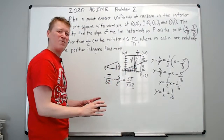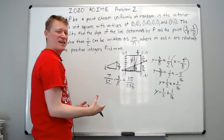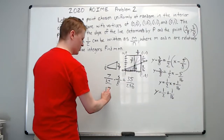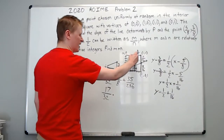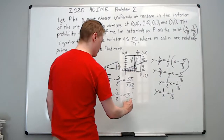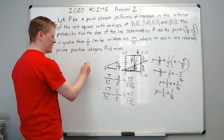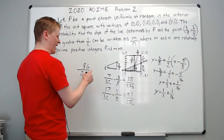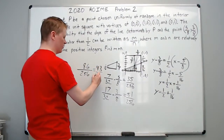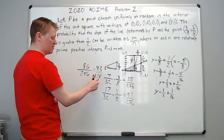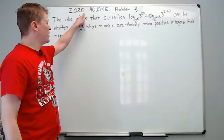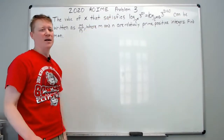For this second trapezoid, the bases are 10/16 (which is 5/8) and 7/16, averaging to 17/32. The height is 3/8. So the area is 17/32 times 3/8 equals 51/256. Adding the two regions: 35/256 plus 51/256 equals 86/256. Dividing by 2 gives 43/128, and these are relatively prime. So m plus n equals 43 plus 128 equals 171. That is the answer.